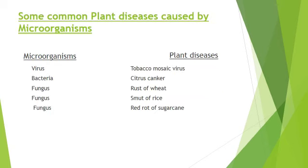We will study some common plant diseases caused by microorganisms. First, virus — it causes a disease in plants called tobacco mosaic virus. It occurs in the tobacco plant, and the symptoms are the appearance of uneven spots and discoloration on leaves. Next, bacteria — it affects the citrus plant and the disease is citrus canker. Symptoms include lesions on leaves, stems, and fruits with raised brown water-soaked margins.